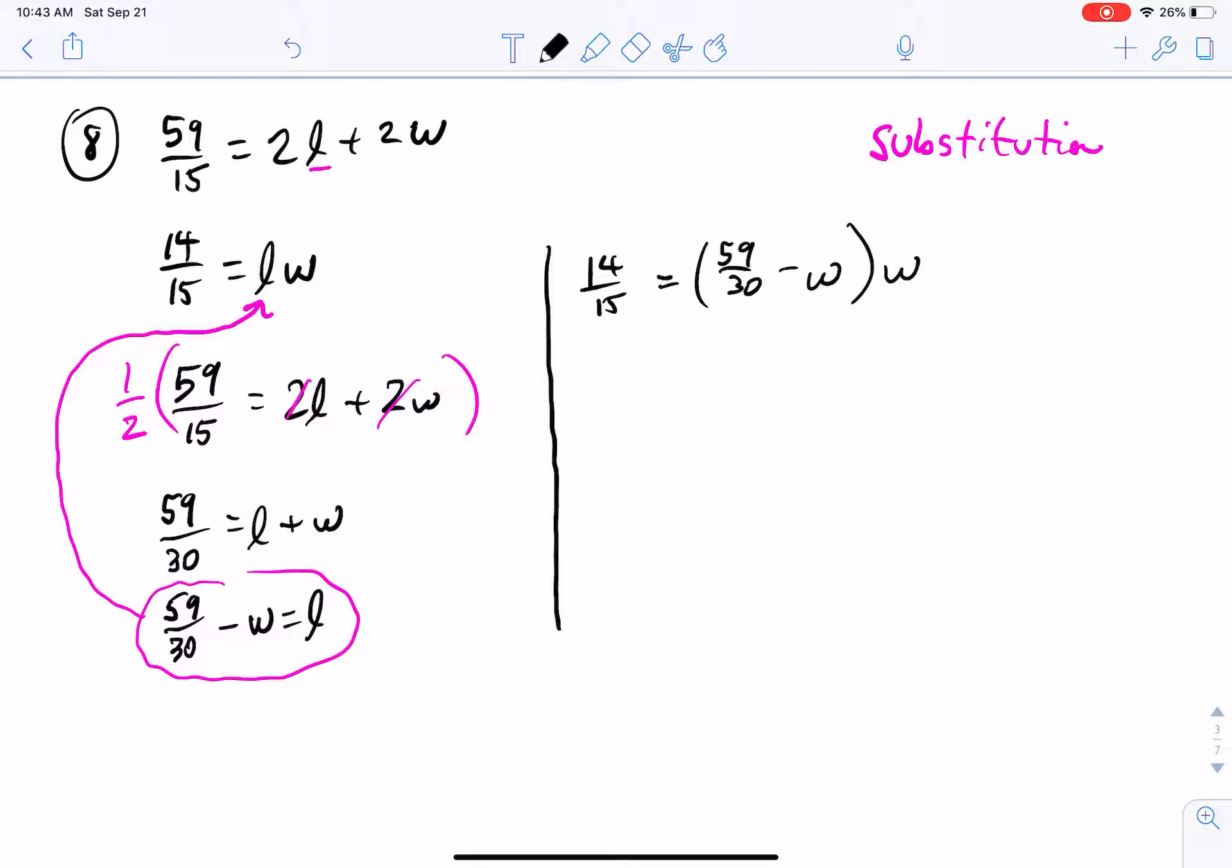Don't substitute it back into the same equation, then you're just going to go around and around in a loop. So I've got to go back to my area equation, and I'm going to take the L out and I'm going to replace it with 59 over 30 minus the width. So 14 over 15 is equal to 59 over 30 minus W times W. And now I need to solve this thing for W. I'm going to suggest that we distribute the W that's on the outside to both of the terms that are in the parentheses. 14 over 15 is equal to 59 over 30 W minus W squared.